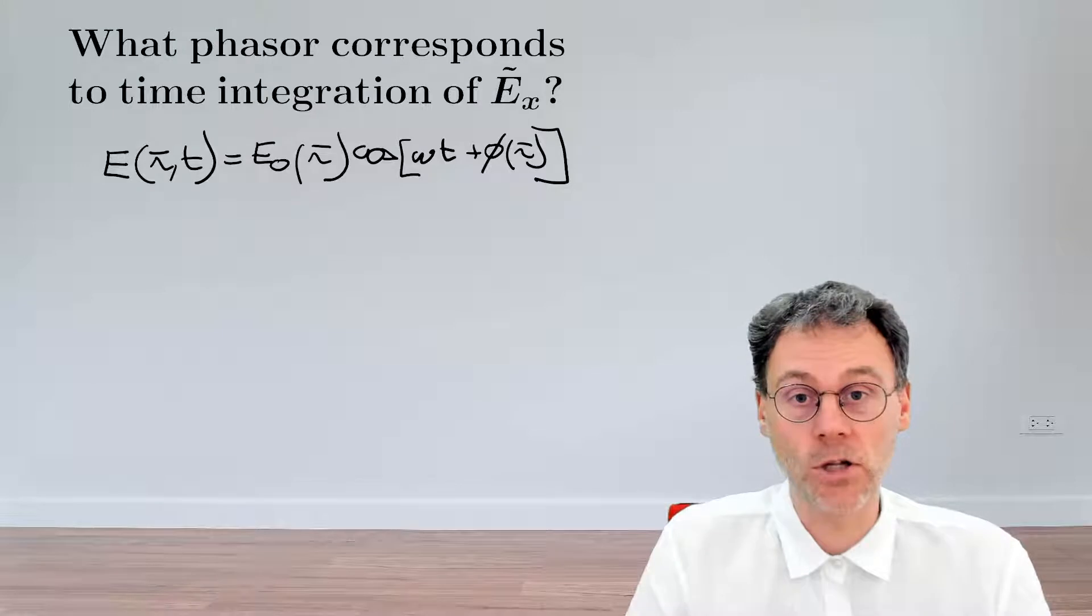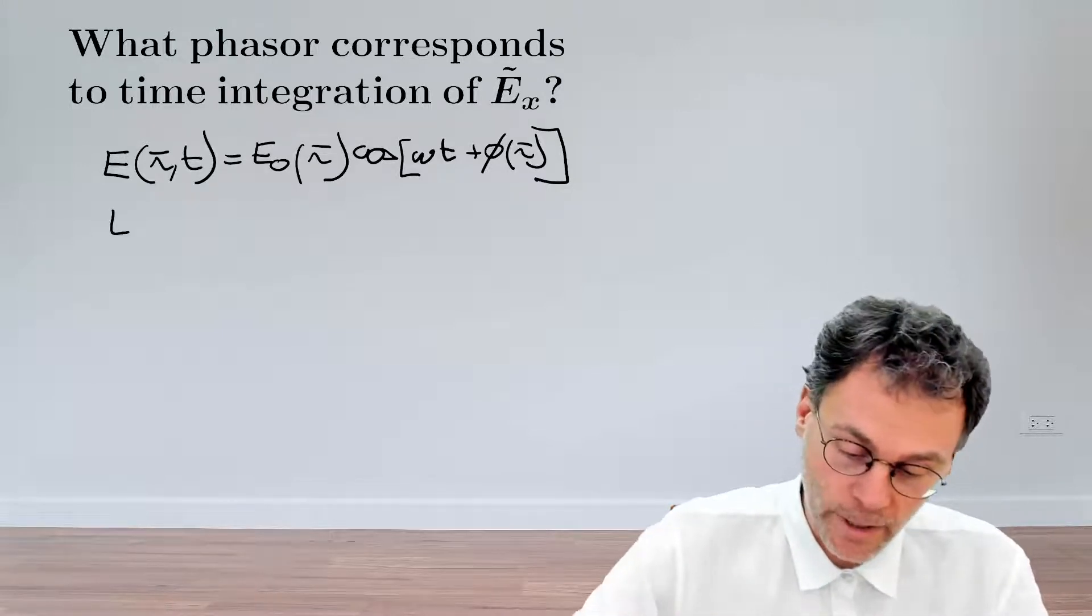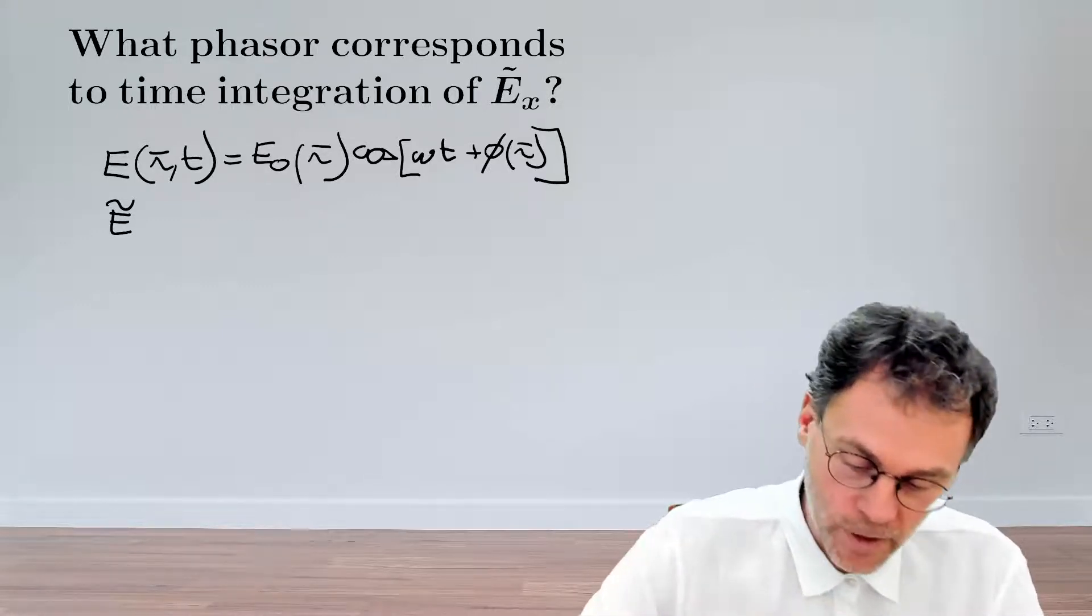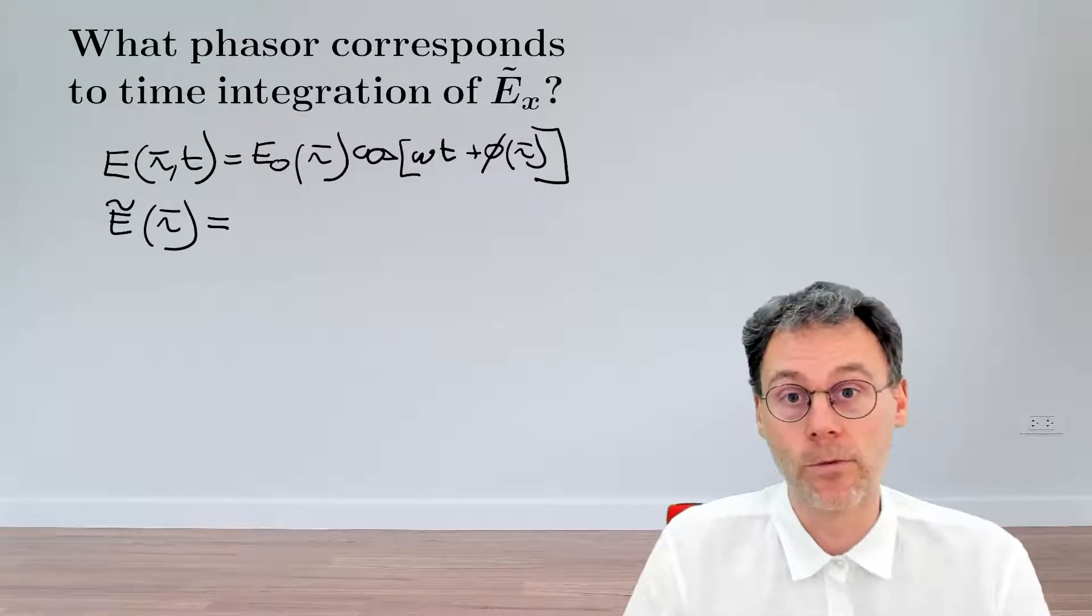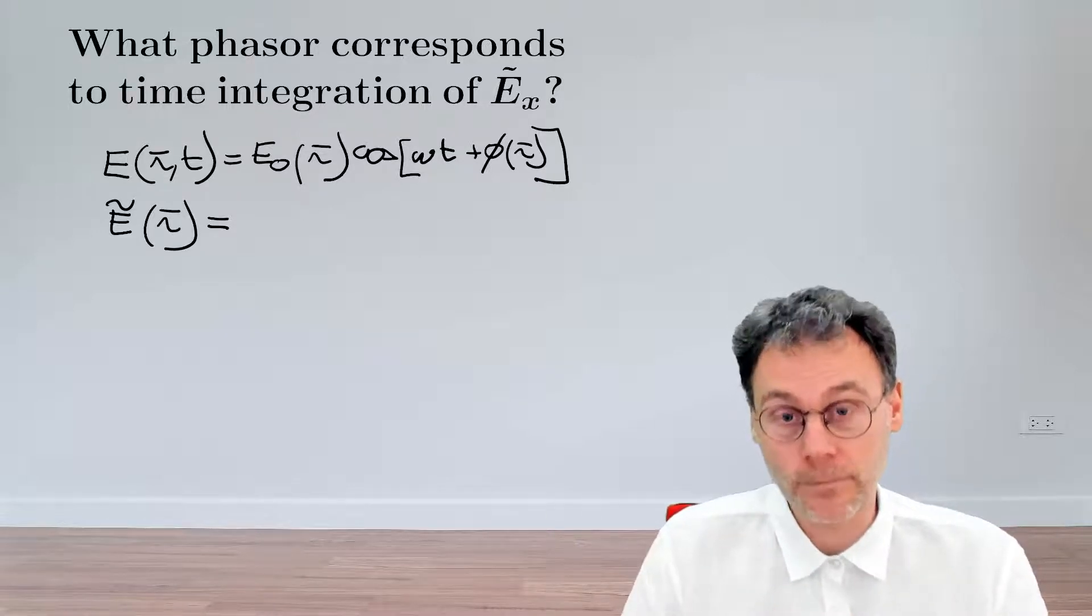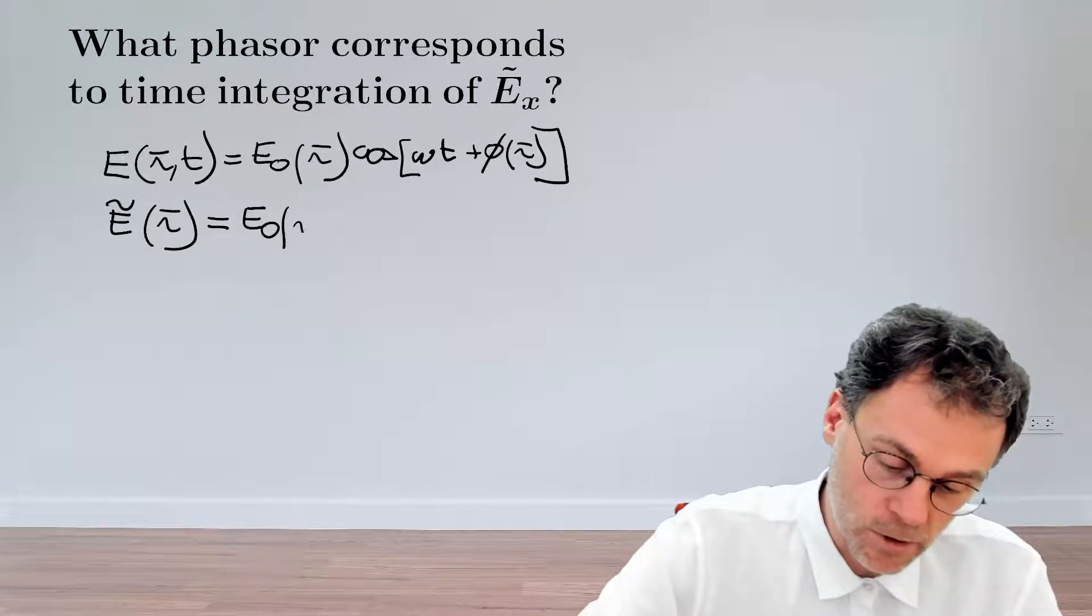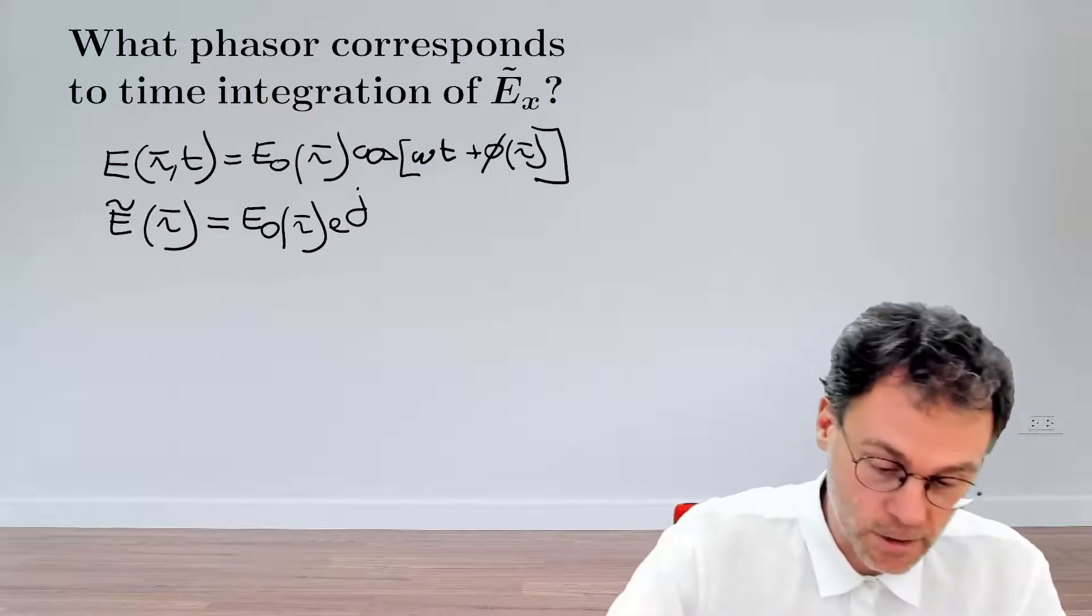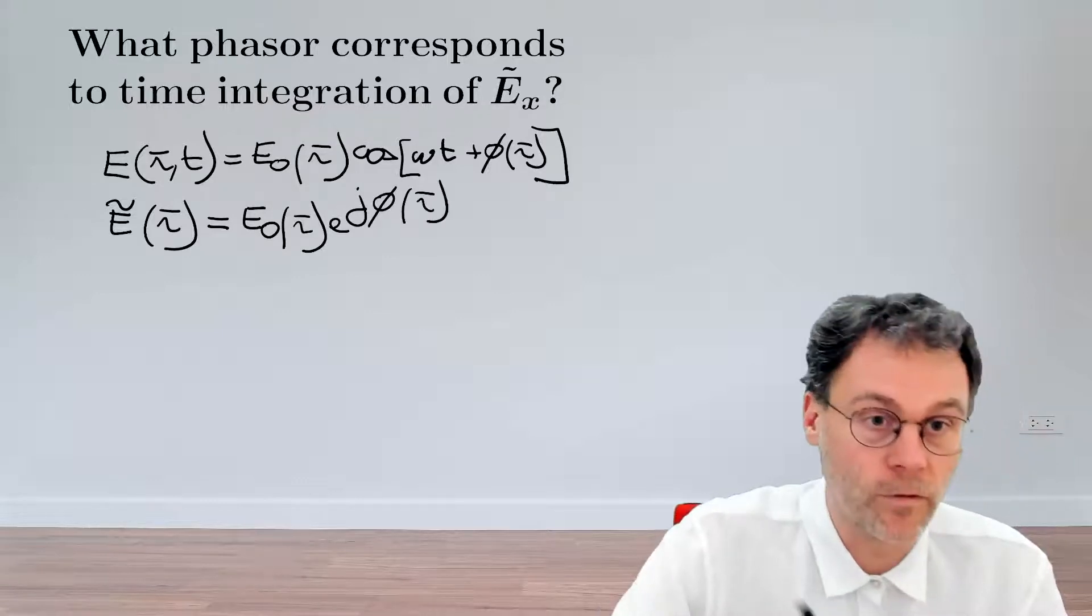vary as a function of the spatial coordinates. So, if we have an oscillation like this, then we know we can represent that also by a complex number, the phasor, which I will denote here by this tilde, and the phasor is only dependent on the spatial coordinates because we've abstracted away the temporal dependence. So, how do we construct this complex number? We take as amplitude the amplitude of the oscillation, so that's E₀ of R, and then the phase of that complex number is just the phase of that sinusoidal oscillation. So, that becomes exponential j φ of R.